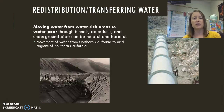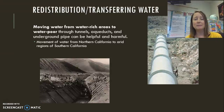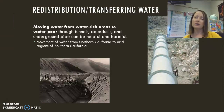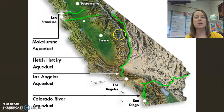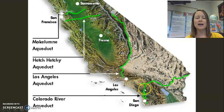Instead of building reservoirs, we can also transport or transfer water from one location to another using tunnels, aqueducts, canals, and pipes. One area known for doing this is California, moving water from wet northern California to the dry arid regions of southern California. This is California's water system, and you can see three aqueducts that transfer water from one part of California to another, from higher elevations to the coast.